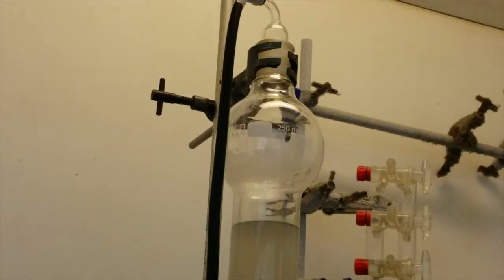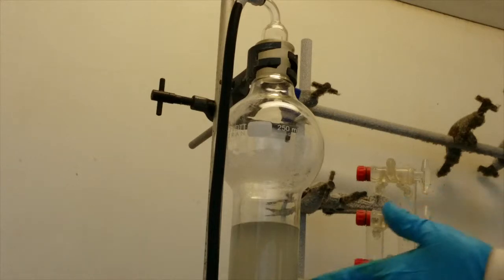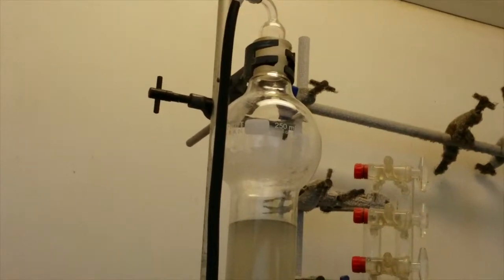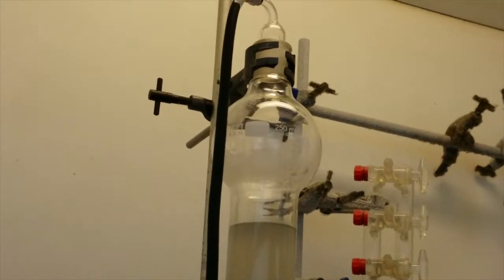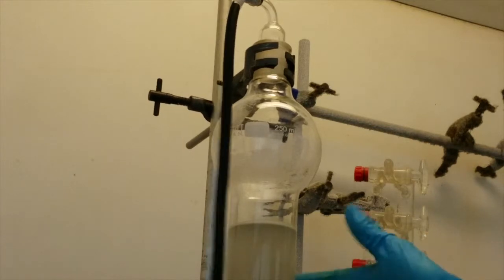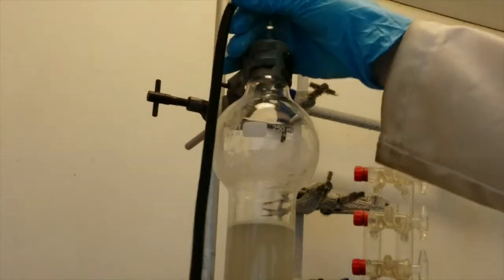Eventually the solvent level will drop to the same height as the silica in the column. At this point you will see no excess solvent above the silica but the silica will still remain translucent. At this point give the side of the column a good tap. This forces the silica at the top to form a totally flat layer and helps remove any air bubbles trapped in the column.